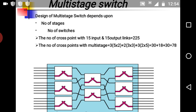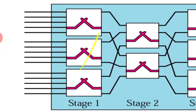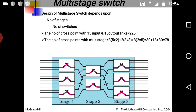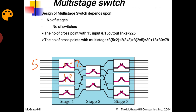Looking at the cross points: with 5 inputs and 2 outputs at the first stage, that gives 10 points; 10 at the middle stage; and 10 at the last stage — totaling 30. Plus the middle switches with 3×3 = 9 each, giving additional 9+9 points. In total, the calculation shown on the slide is 78, compared to 225 for a direct crossbar. For 15 users, 78 crosspoints versus 225 is a significant hardware reduction. For 10,000 users, the crossbar approach is completely infeasible, so we use multistage switching.